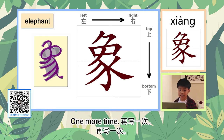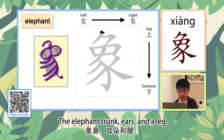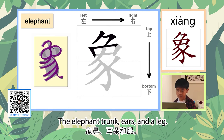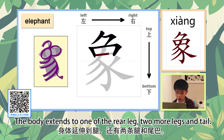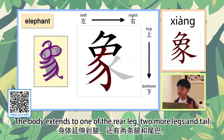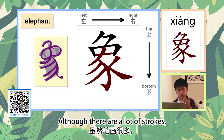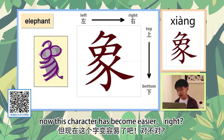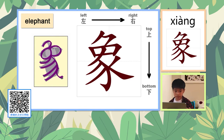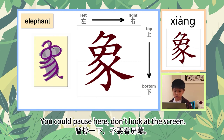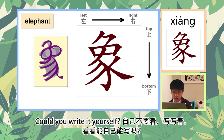One more time: the elephant's trunk, ears and a leg, the body extending to one of the rear legs, two more legs and a tail. Although there are a lot of strokes, this character has become easier now, right? You could pause here — don't look at the screen. Could you write it yourself?